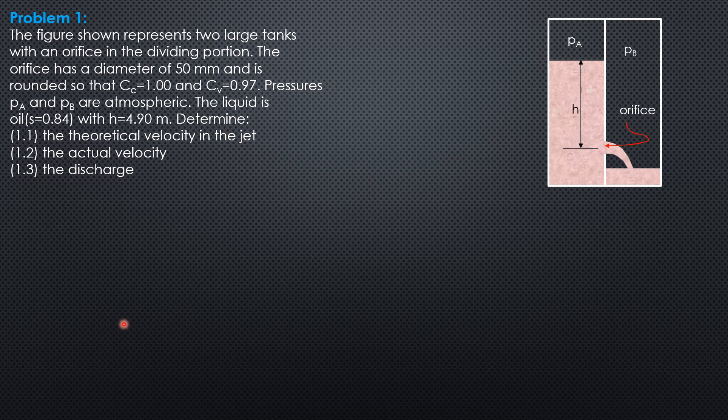Take note that the theoretical velocity is simply square root of 2G times H, where H is upstream head minus downstream head.